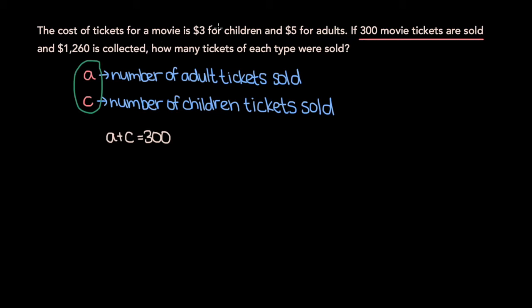Now, we're also told that children's tickets cost $3 and that adult tickets cost $5, and that in total $1,260 is collected. If adult tickets cost $5 each and A adult tickets are sold, that means 5A is the amount of money made from adult tickets. Similarly, children's tickets cost $3 each and C children's tickets are sold, so 3C is the amount from children's tickets. The total, 5A plus 3C, equals $1,260.